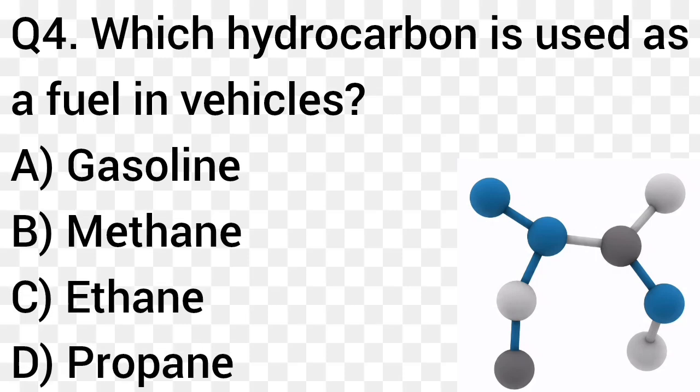Question number 4. Which hydrocarbon is used as a fuel in vehicles? Option A: Gasoline. Option B: Methane. Option C: Ethane. Option D: Propane. The right answer is option A, Gasoline.